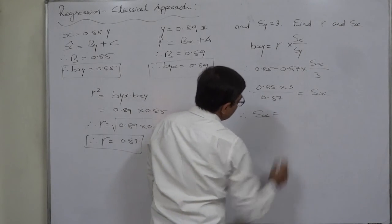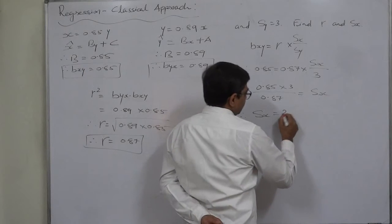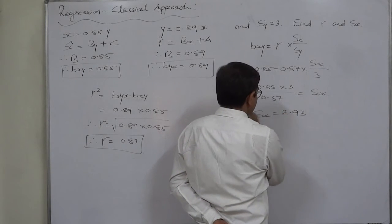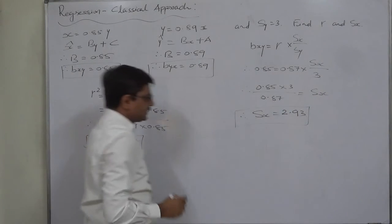Using calculator, we can find the approximate value of sx as 2.93, adjusting to two decimal places only.